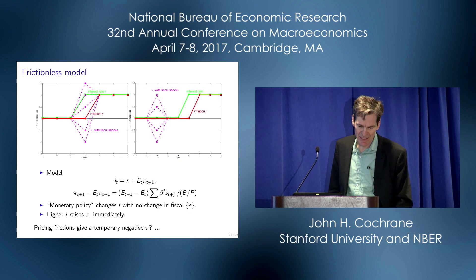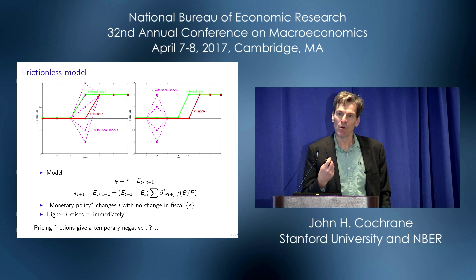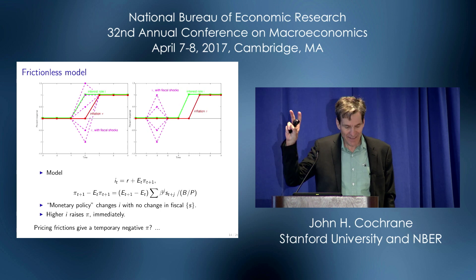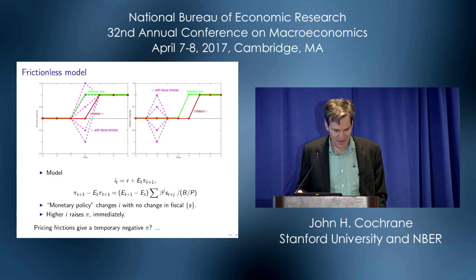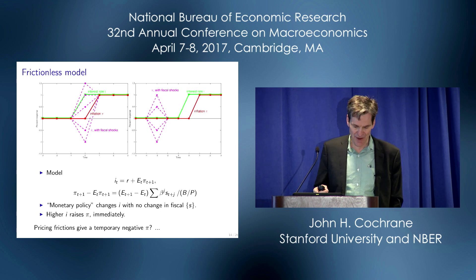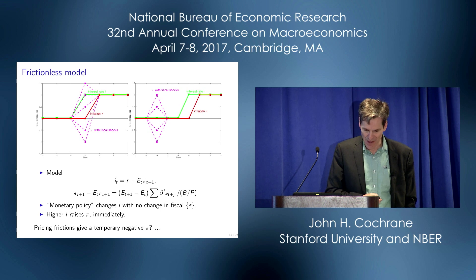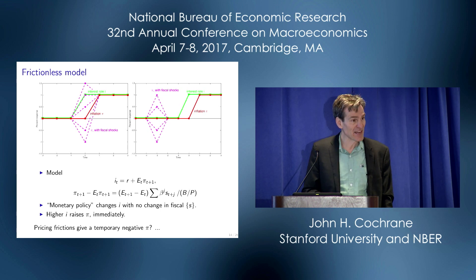Starting with the frictionless model: I have a rational expectations Fisher equation and fiscal policy indexes inflation innovations. Pretty much the defining feature of the Fed in monetary policy is that they cannot change fiscal policy. So monetary policy is a change in interest rates with no change in fiscal policy. That kind of interest rate rise — the green line — just increases inflation one period later in red with no temporary negative effect. The purple lines combine a fiscal policy shock with the interest rate rise. A joint monetary-fiscal contraction can give you a negative inflation on the day the policy is announced, followed by inflation induced by the higher interest rates.